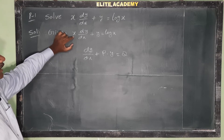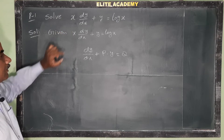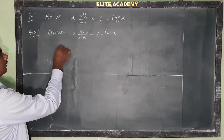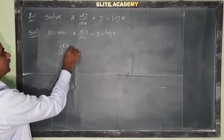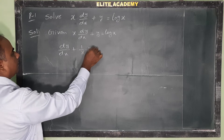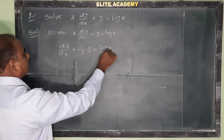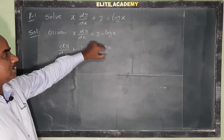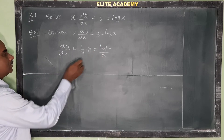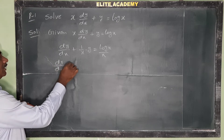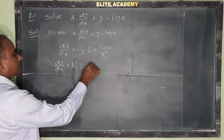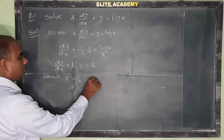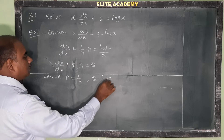We have to divide the entire equation by x. Dividing the entire equation by x gives: dy by dx plus 1 by x into y is equal to log x by x. So the equation is in the form dy by dx plus P into y is equal to Q, where P is equal to 1 by x and Q is equal to log x by x.